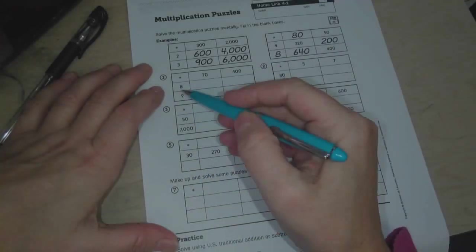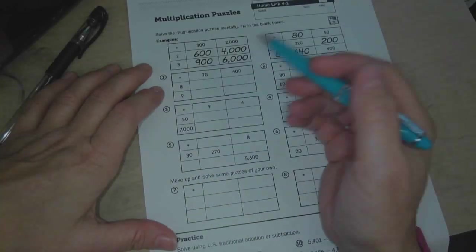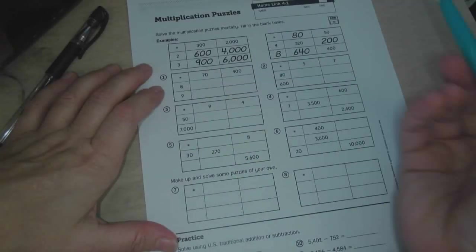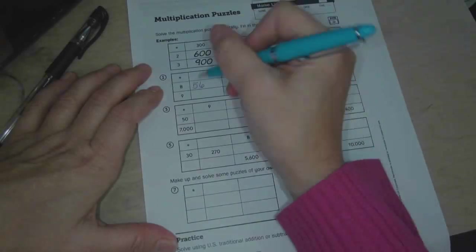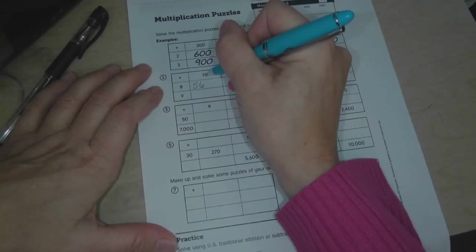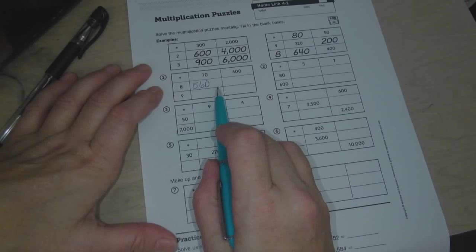Okay, so 8 times 70. Well, we know that our basic fact, 8 times 7 is 56, and then it's just one zero, so the answer is 560.